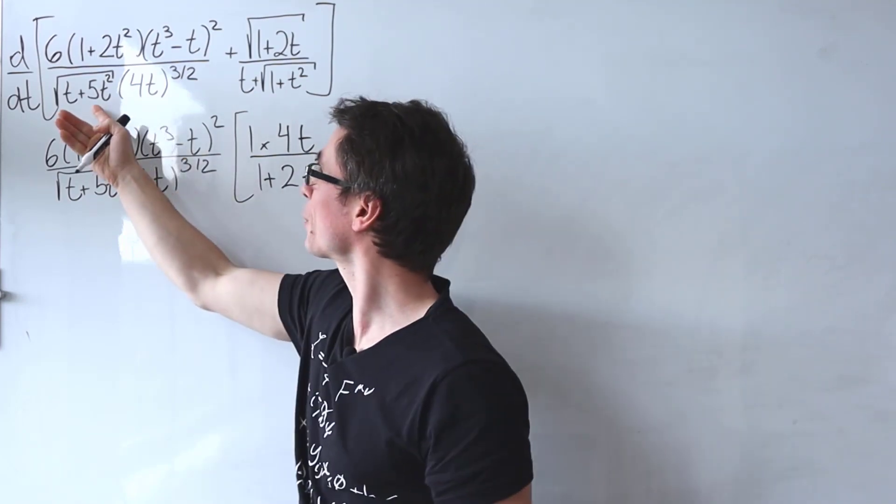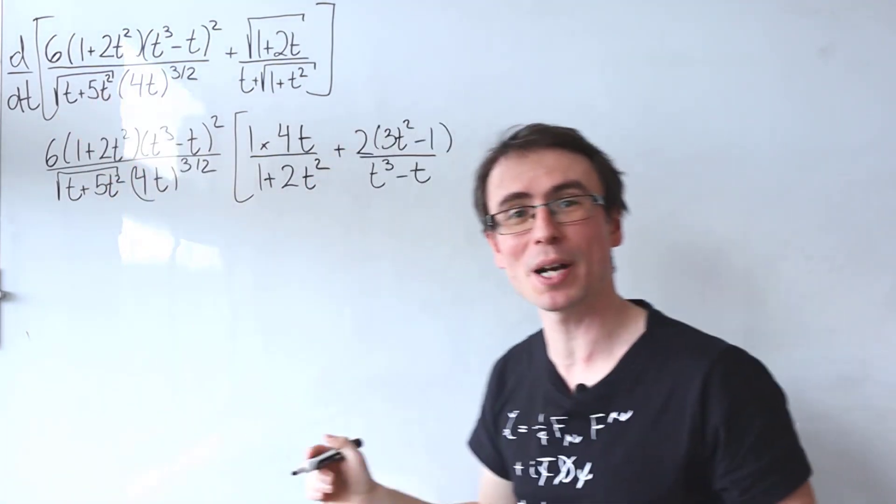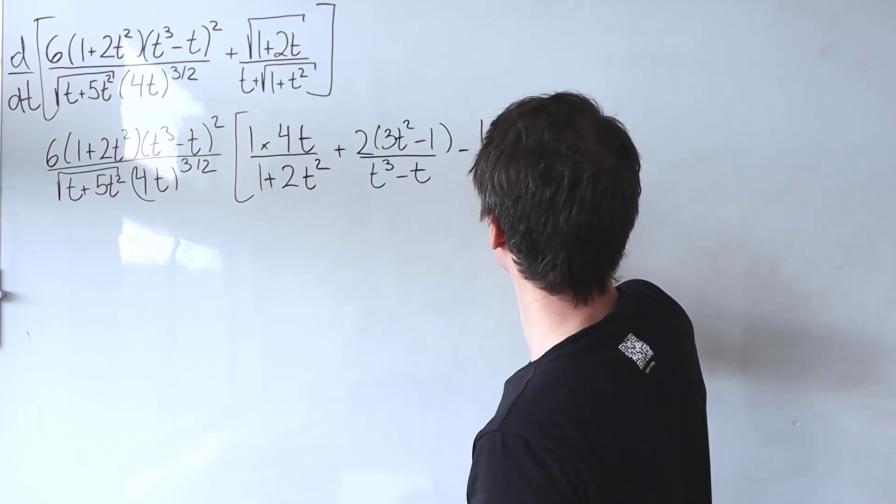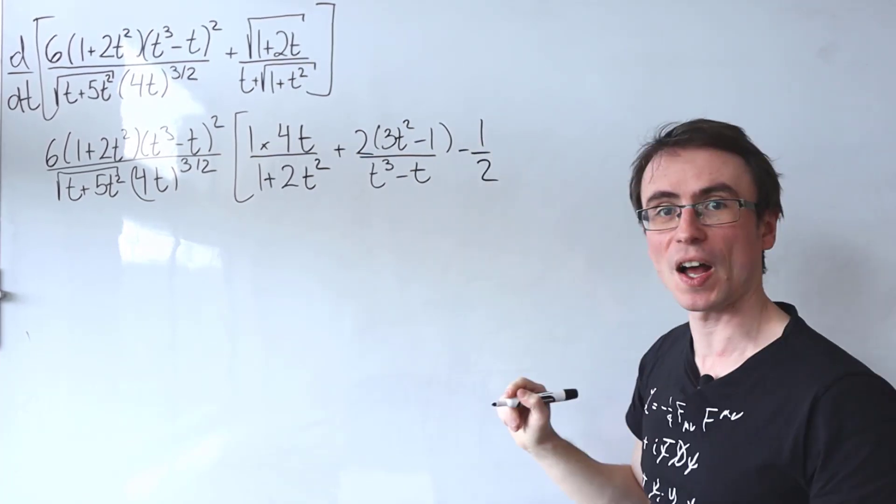Now for the next one, we're going to have a negative power because we're dividing by the square root of an expression. So my power will be equal to negative a half.